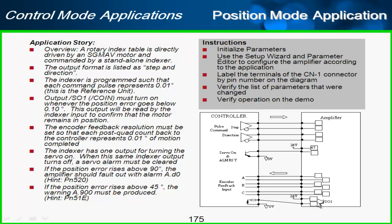We have the output SO1 connected here. We want that to turn on whenever the position error goes below 0.1 degrees. And we'll use that in the indexer controller to confirm that the motor is in position at the end of the move.